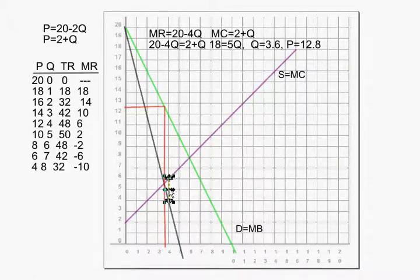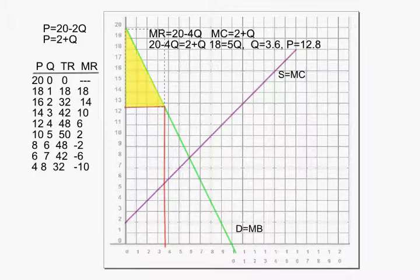Let's get rid of the marginal revenue and real quickly see what other things we can do with a monopolist. Now since the equilibrium price with a perfectly competitive firm would be eight dollars and the quantity would be six, where is the consumer surplus going to be now? Well the consumer surplus would be this area above the price that we solved and found would be $12.80. So that yellow would be the new consumer surplus.